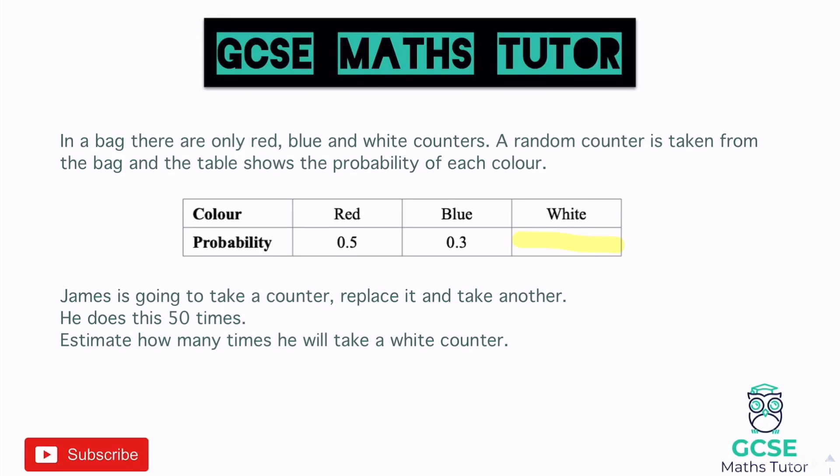It then says James is going to take a counter, replace it, and take another, and he does this 50 times. Estimate how many times he'll take a white counter. We don't know the probability of white yet, but we can work that out.